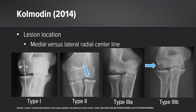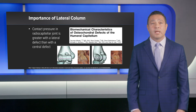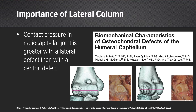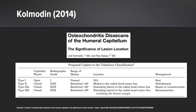Kolmodin used the radial center line to divide the location of the lesion as medial or lateral. A grade one is the cystic change; grade two is if the lesion is medial to the radial center line; grade three A is if the lesion has passed to the lateral side but the lateral column is intact; and grade three B is when the lateral column has been violated and there's no containment. Atira Mihata showed in a biomechanical study that contact pressure in the radiocapitellar joint is greater with a lateral defect than with a central defect, supporting an update to the Takahara classification.